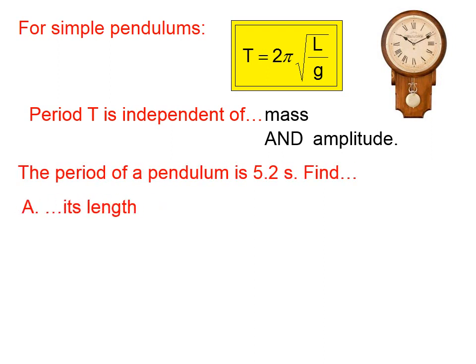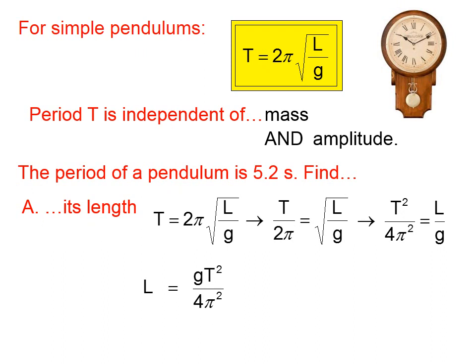So let's do a problem or two. The period of a pendulum is 5.2 seconds. Find its length. So we need to take this given equation, and we need to solve it for L. Let's divide both sides by 2π. Let's square both sides to get rid of the square root sign. And then, if we multiply both sides by g, we get this expression.